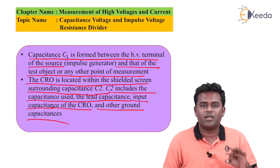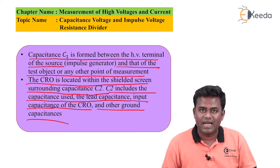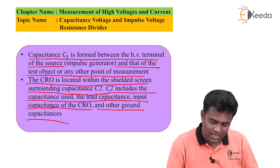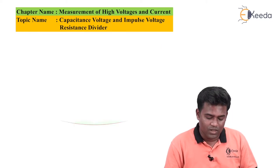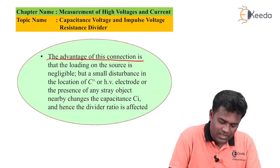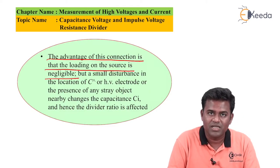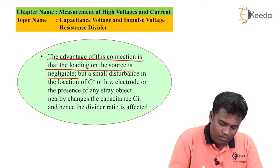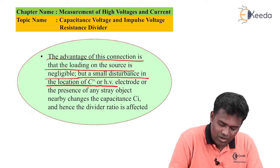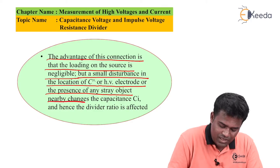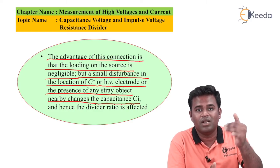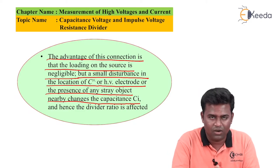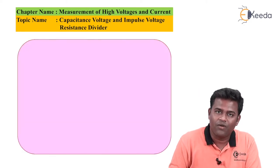C2 accounts for three effects: first, the lead capacitance; second, the stray capacitance counted as ground capacitance; and third, the input capacitance of the CRO. The advantage of this connection is that the load on the source is negligible. But small disturbances in the location of C or the HV electrode, or the presence of a stray object nearby, changes capacitor C1 — that is, the lead capacitance — and hence the divider ratio is affected.